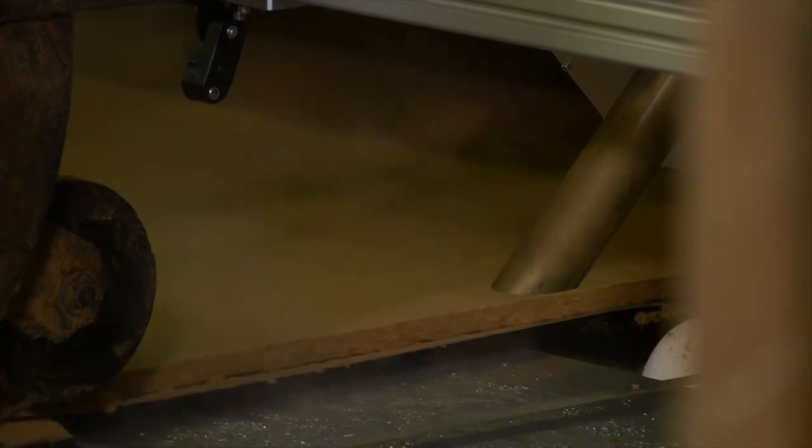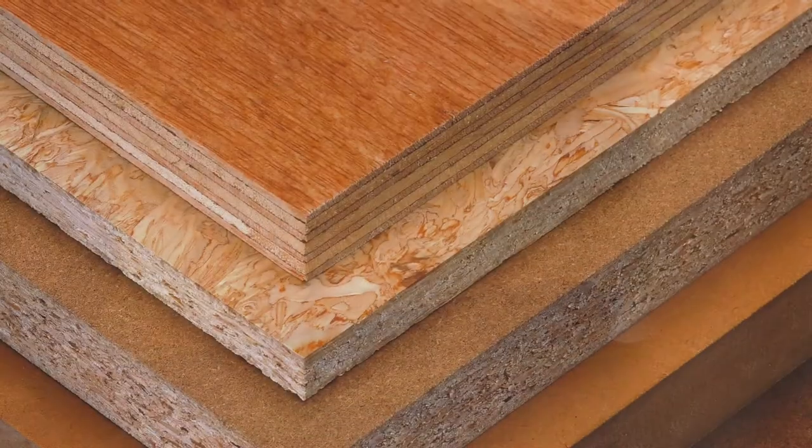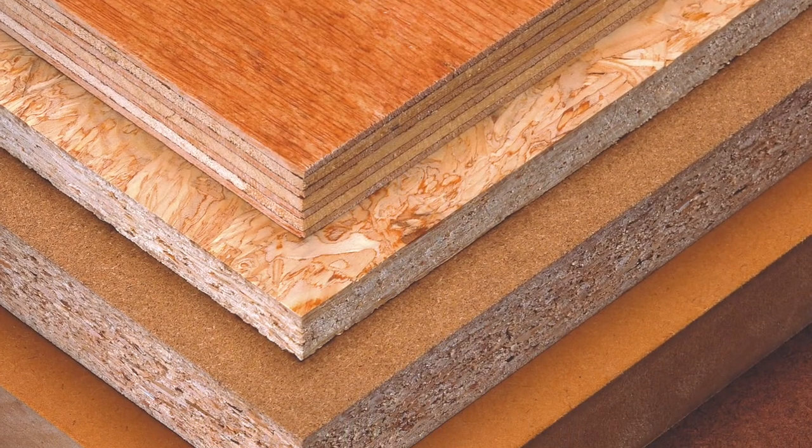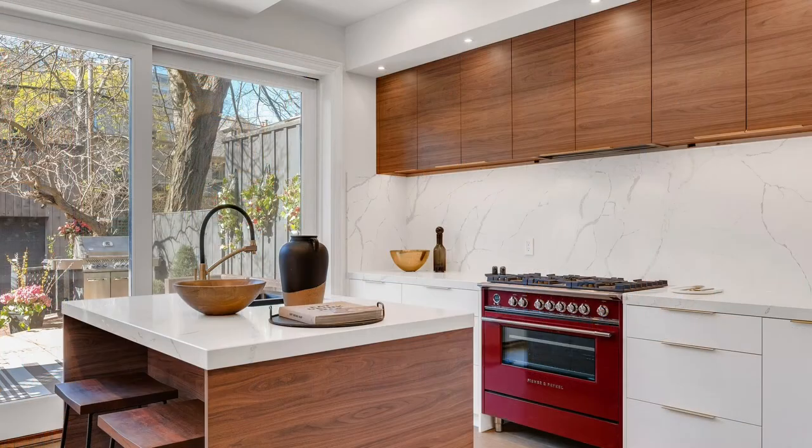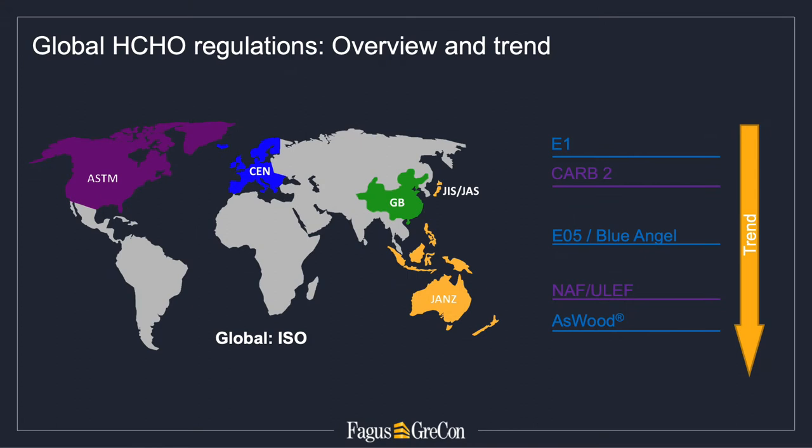Formaldehyde is an essential component of glue utilized in many wood-based materials. Over time the glue gets decomposed and formaldehyde will slowly be released into the ambient air. Since free formaldehyde poses a health risk, the permissible formaldehyde emission of wood-based materials is strictly regulated worldwide. The limit values have been and continue to be tightened. The trend is clearly moving towards lower emitting products.